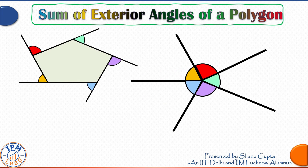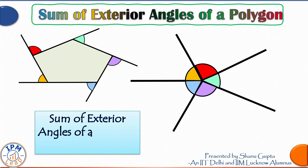If you slide each of these sides to one point, the exterior angles fit snugly around a single point. We know that angles around a point always add up to 360 degrees. So this is proof that the sum of exterior angles of a polygon is equal to 360 degrees — and the best part is it is always 360 degrees regardless of the number of sides.